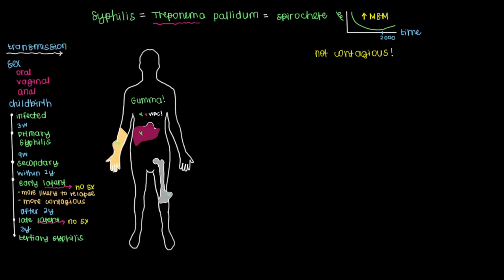Now these gummas can be so deforming that you can have a result like this here. This is a bust of a patient that had tertiary syphilis with these very striking deformities. One right here, another one there, the nose, and maybe one over here as well. And if you ever visit the Museum of Man in Paris, you can see this bust of this patient with tertiary syphilis.